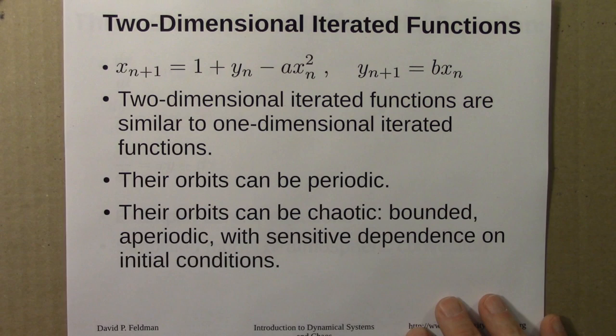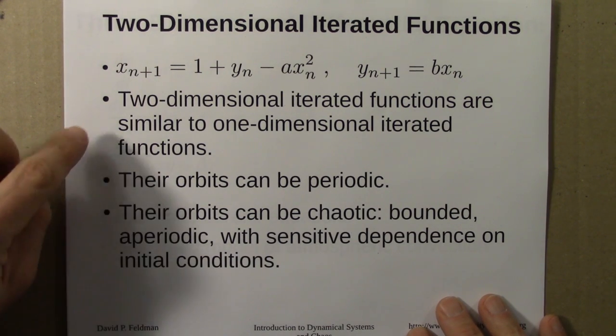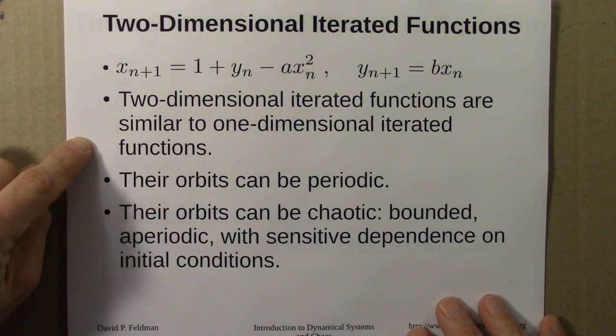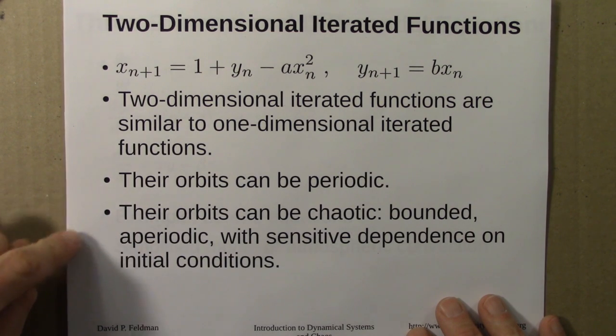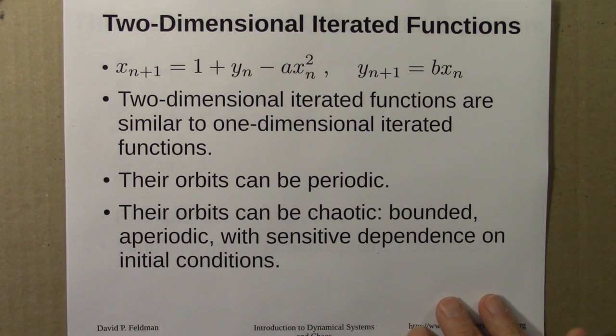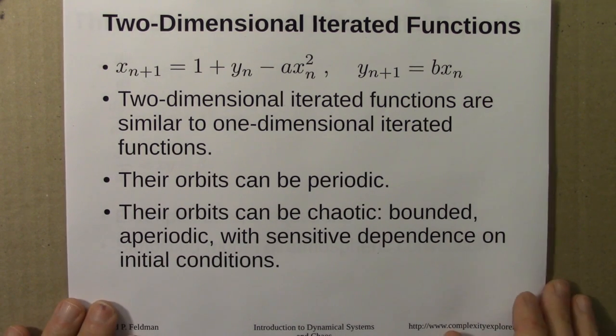Just a little bit more about 2D iterated functions. Mathematically, they're very similar to 1D iterated functions. Orbits can be periodic, and we can also have chaotic behavior. Just a reminder that chaotic behavior is bounded, aperiodic orbits that have sensitive dependence on initial conditions.